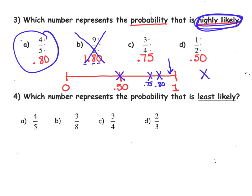And lastly, let's complete number 4 together. Which number represents the probability that is least likely? Once again, convert each of these to a decimal. Take a moment. 4 divided by 5. Punch that into your calculator. You should have gotten 0.80.